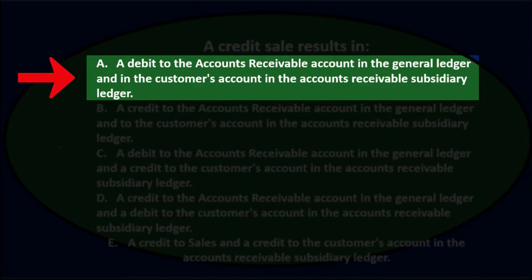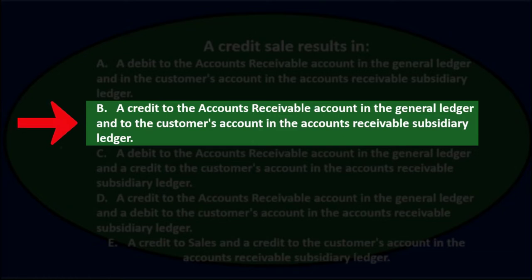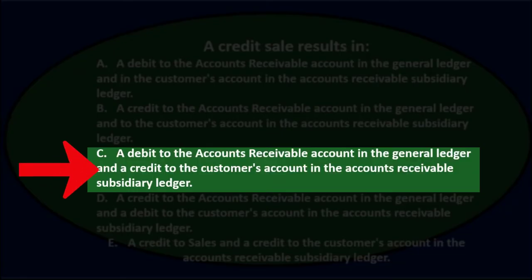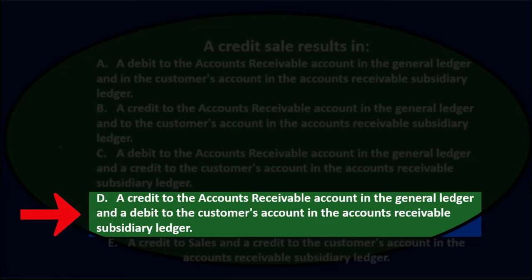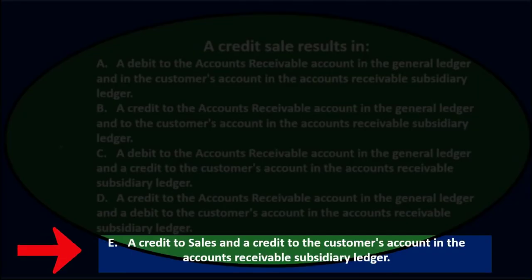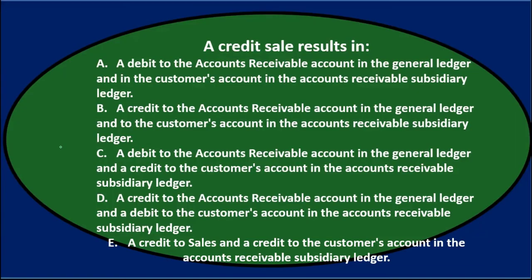Next question: a credit sale results in — A) a debit to the accounts receivable account in the general ledger and in the customer's account in the accounts receivable subsidiary ledger, B) a credit to accounts receivable in the general ledger and to the customer's account in the subsidiary ledger, C) a debit to AR in the general ledger and a credit to the customer's account in the subsidiary ledger, D) a credit to AR in the general ledger and a debit to the customer's account in the subsidiary ledger, or E) a credit to sales and a credit to the customer's account in the subsidiary ledger.